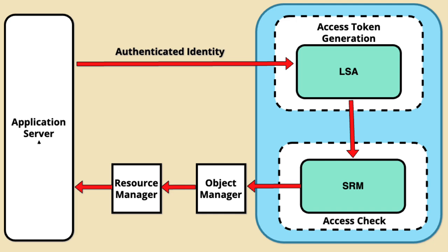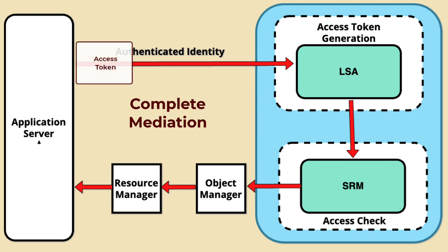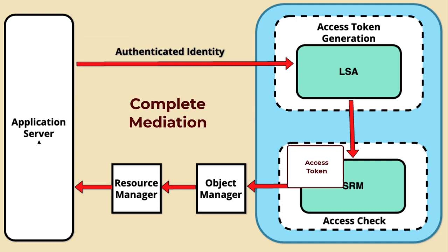Here's a detailed explanation of how the SRM enforces security policies. First, Complete Mediation: the SRM is invoked whenever a monitored access is attempted. This means that every access request to a protected resource, such as files, processes, or registry keys, is intercepted by the SRM. This ensures that no access can bypass the security checks.